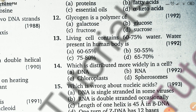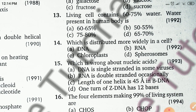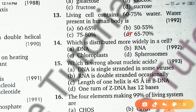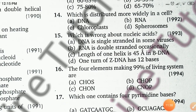The 13th question: living cells contain 60–75% water. What percentage of water is present in the human body? The right answer is option D: 65–70% of our body is made of water. About two-thirds of the human body is water, and around 50% of body water is intracellular water.